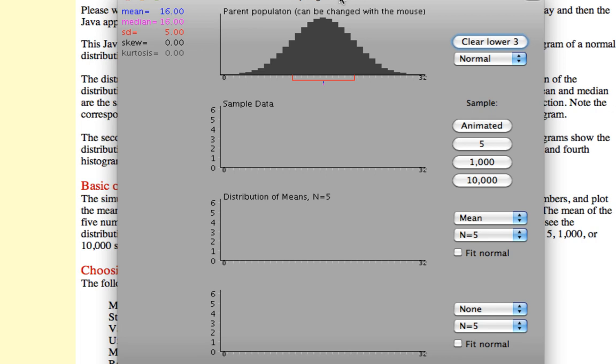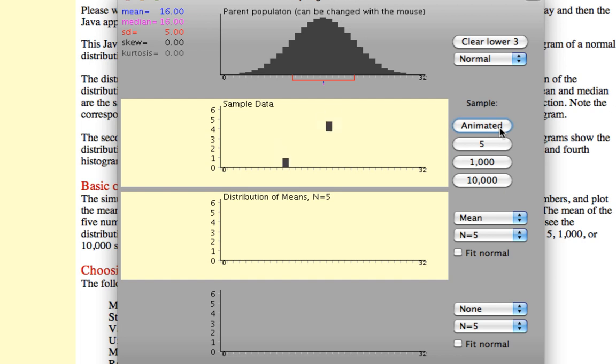It starts you off with the default normal distribution, although you can also select a uniform or a skewed or even a custom distribution where you can draw it in with your mouse. But for now, click on this animated button to see a sample of five being randomly drawn from this population.